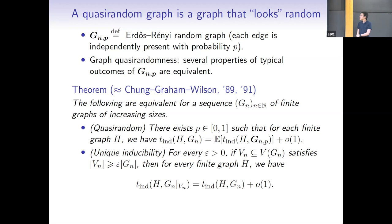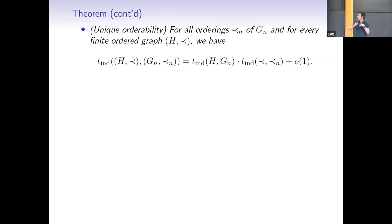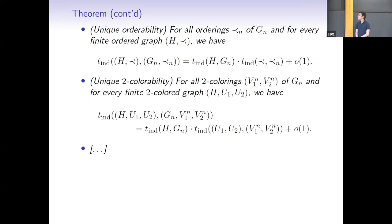Here's another different but equivalent property: unique orderability. If I order the vertices of my graph, I now have an ordered graph. I can compute densities of ordered graphs, requiring both edges and order to be preserved. What I see is that it behaves independently: the density of an ordered graph equals the density of the graph part times the density of the order part. Even if I order adversarially, I get an order that looks as if I was ordering at random. Similarly, unique 2-colorability: partition vertices into red and blue, and again the density of a colored graph equals the density of the graph part times the density of the coloring part.